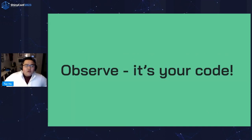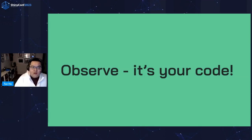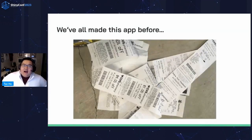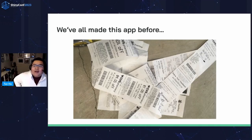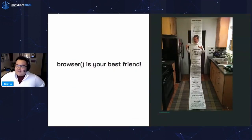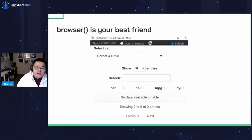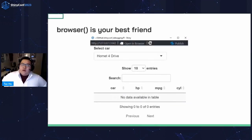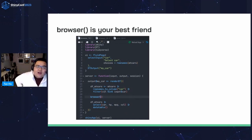Chances are you wrote this app. You know what it depends on, what data it uses, what logic it's meant to be applying. So it's always good to start by observing. Unfortunately, we've all made this overly complex app before — lots of moving pieces, lots of code chunks. However, you're the expert. You've got a good mental model about how this app is supposed to work and a rough idea of where the problem is. We can literally dig into it by using browser. Browser is your best friend. Here's an example of an app where you notice a problem: there's no data in this table, but you're darn sure there should be something in there.